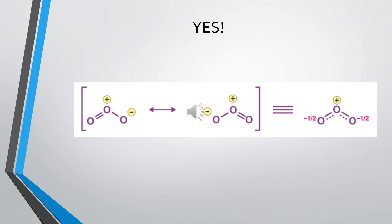We say that ozone is a resonance hybrid of 50% on the left and 50% on the right. We can draw one structure, where each of the terminal oxygens has a charge of negative one-half. Obviously you can't have one half of an elementary charge — you can't split an electron in half. However, you can talk about 50% charge density or charge deficiency, so you can have partial charges if you consider that the charges are electron probability density. The picture on the right nicely shows there is in fact only one O-O bond length in ozone.